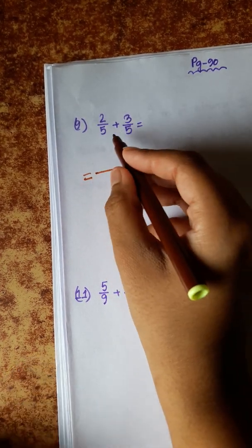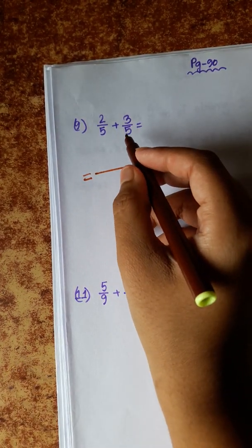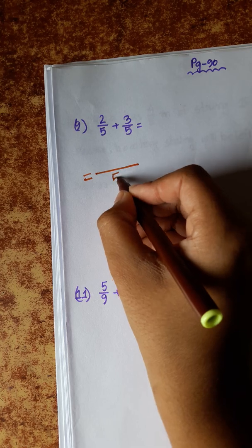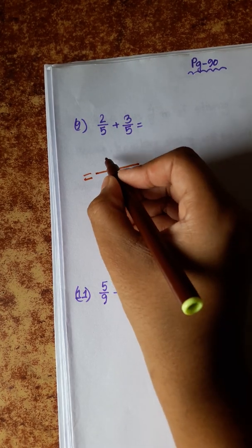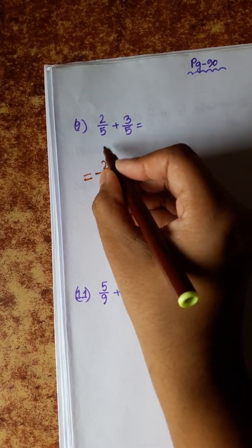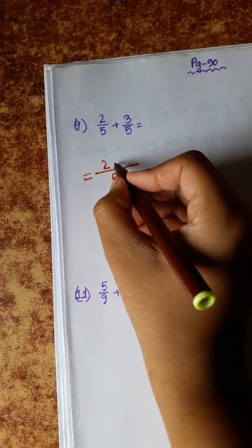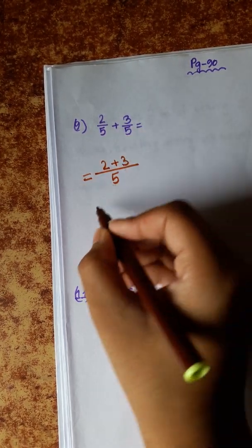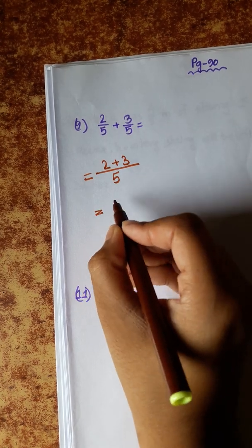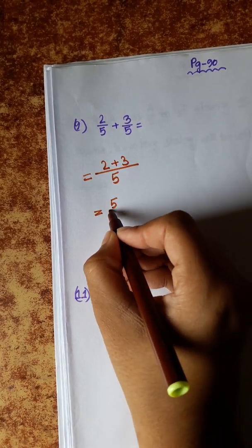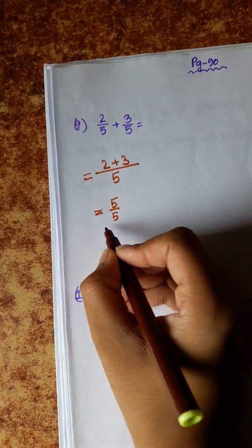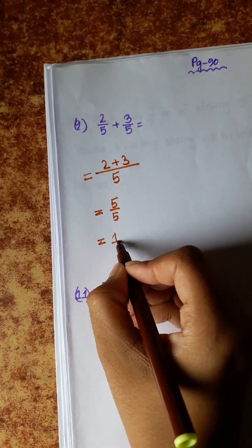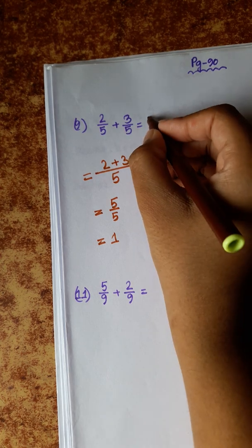Next: denominator 5, same. The numerator: 2 plus 3 equals 5. So 5 divided by 5, which simplifies to 1.